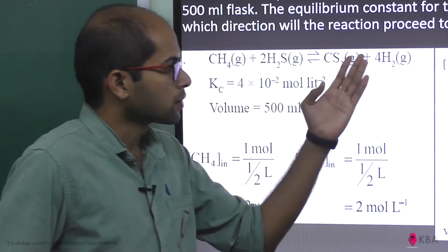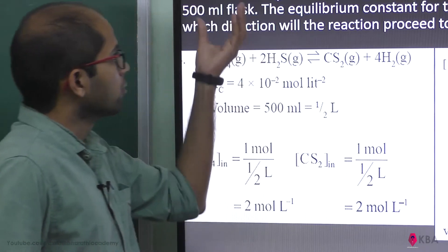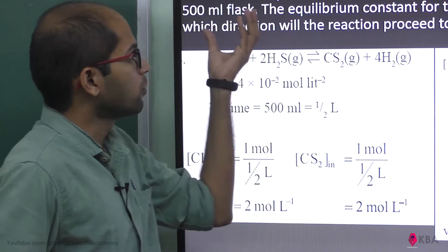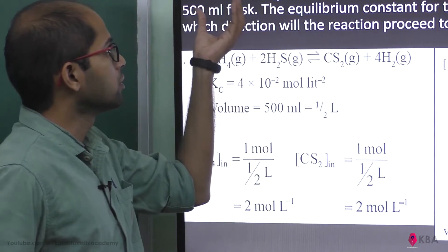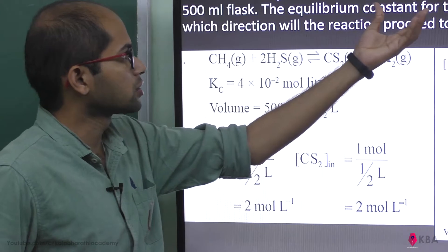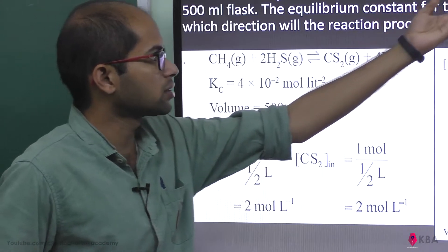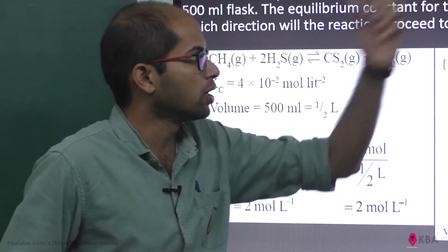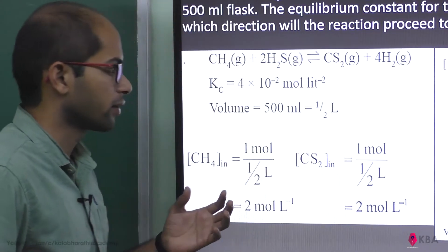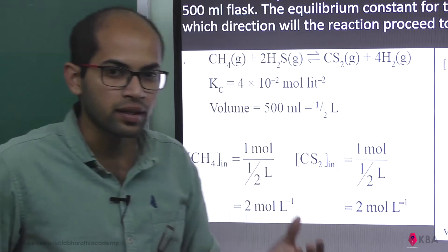For the molar concentrations: methane is 1 mol, carbon disulfide is 1 mol, hydrogen sulfide is 2 mol, and hydrogen is 2 mol. We need to find the reaction quotient Q.